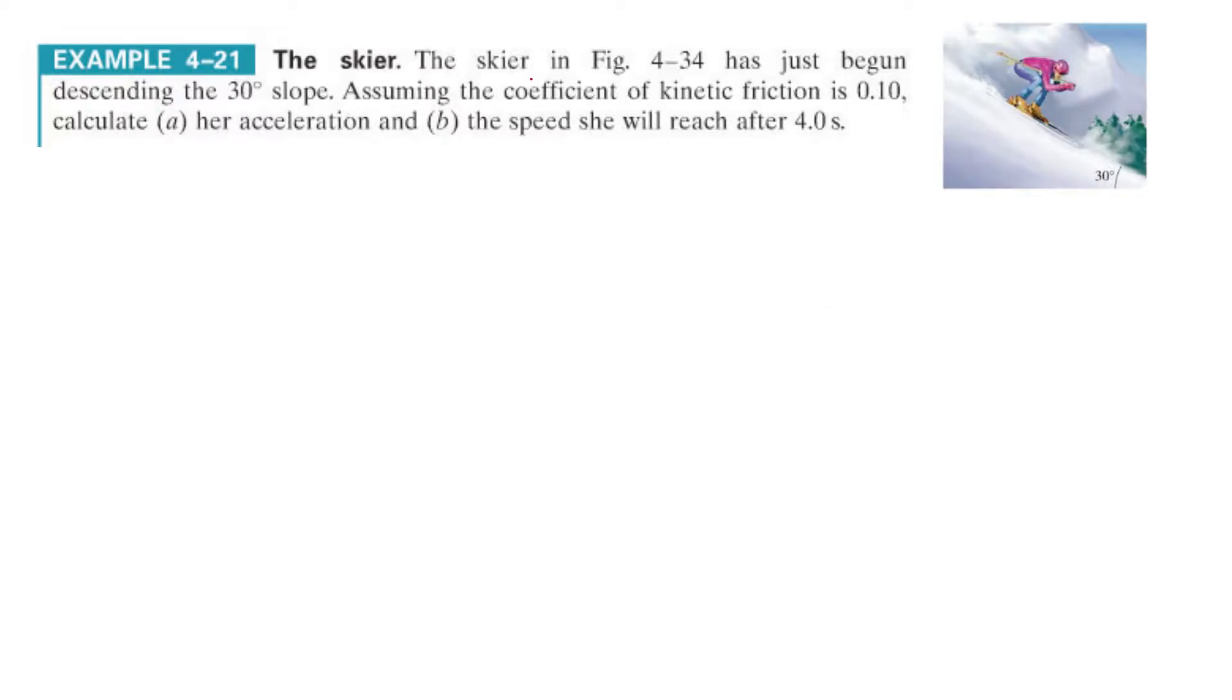Here, a skier in figure 4-34, I copied it right here, has just begun descending a 30-degree slope. So this is 30 degrees. Assuming the coefficient of friction is 0.1, meaning it's pretty darn smooth, it's snow on skis, find her acceleration and her speed.